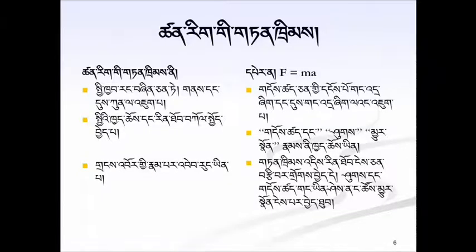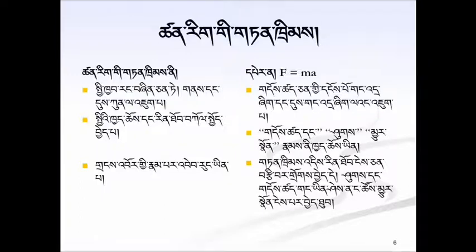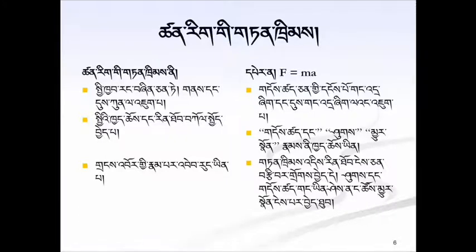The mass of an object is something like its weight. Acceleration is the rate at which it's moving and how that changes. Finally, this law is expressed in quantitative form — it's a mathematical formula. It allows us to calculate specific values. If we know the force acting on an object and its mass, we can calculate the acceleration.